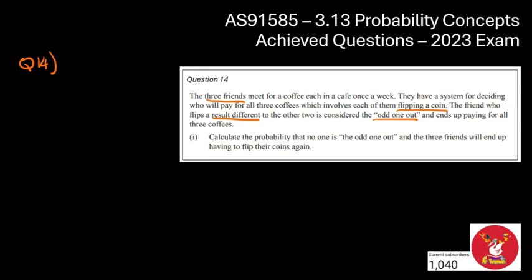Okay, so this one here, I didn't quite know where to start. So what I did is I started writing down all of the combinations of coins that could have happened. And once I did that, that made a bit more sense. So the first combination was heads, heads, heads, and heads, heads, heads. So there's no odd person out there. All of them flip the exact same coin. So that would be an example of when they would need to flip again.